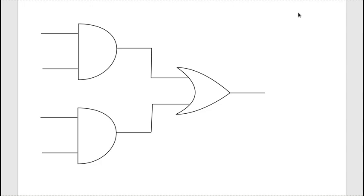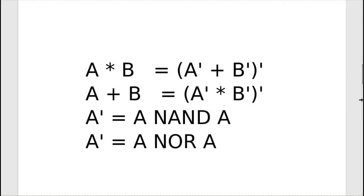I have a combinational logic circuit with only AND gates, OR gates, and NOT gates. What I want to do is represent the same circuit using only NAND gates, or the entire circuit using only NOR gates. When doing this change of representation, I'm not considering the timing of the circuit, only the truth tables of the inputs and outputs. I'm going to be taking advantage of these four equations.